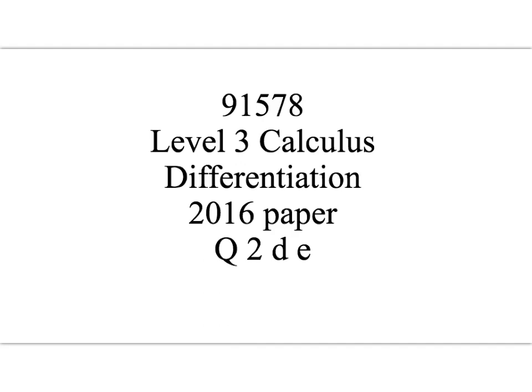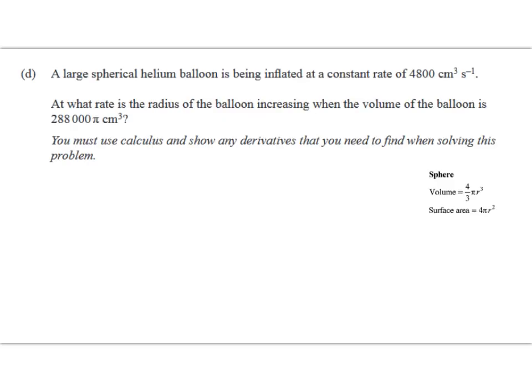Kia ora year 13 and year 12. This is the last part of question 2 of last year's differentiation paper. There's a merit level related rates question in here and then an optimization question which requires a bit more thinking.